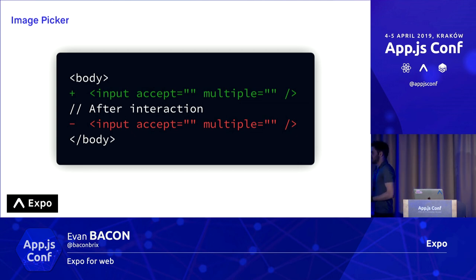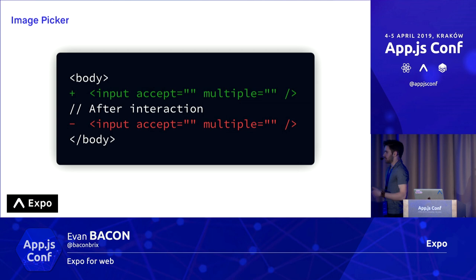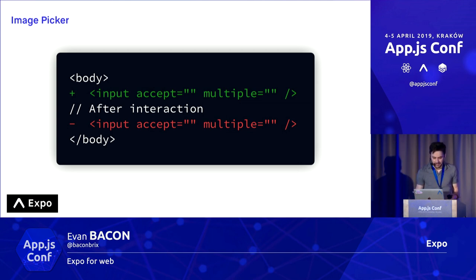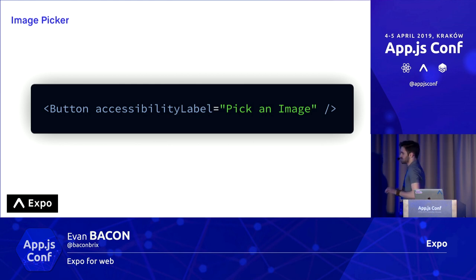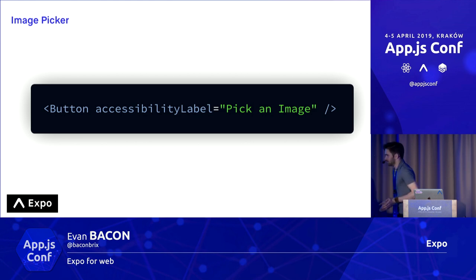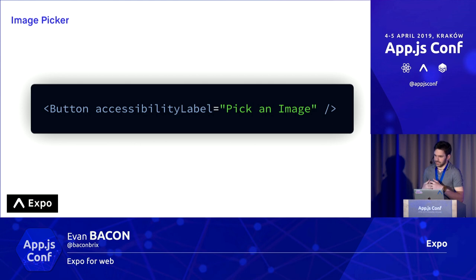The way this actually works is by injecting the input before the transaction and then removing the input after the transaction, because the API is static — you call image picker dot launch camera async and you don't have time to add it to your view. You're probably thinking this makes it hard for screen readers to find, and you're correct. But that's where the great React Native for Web accessibility stuff comes into play — you can just set the accessibility label and the screen reader can find you again.